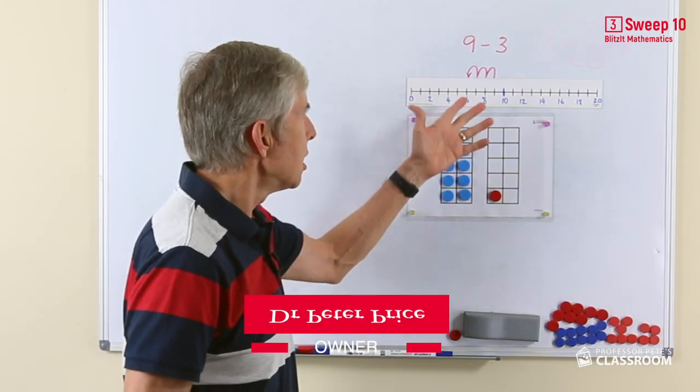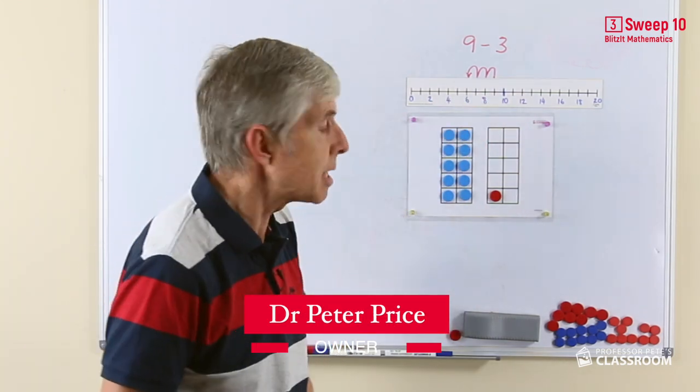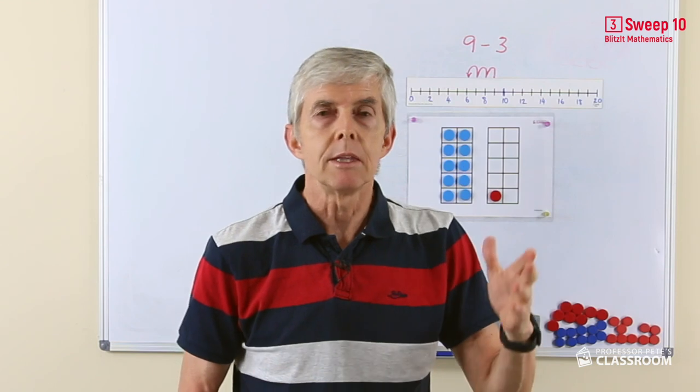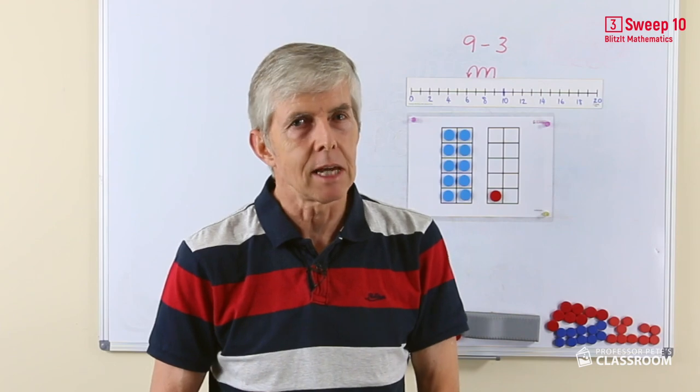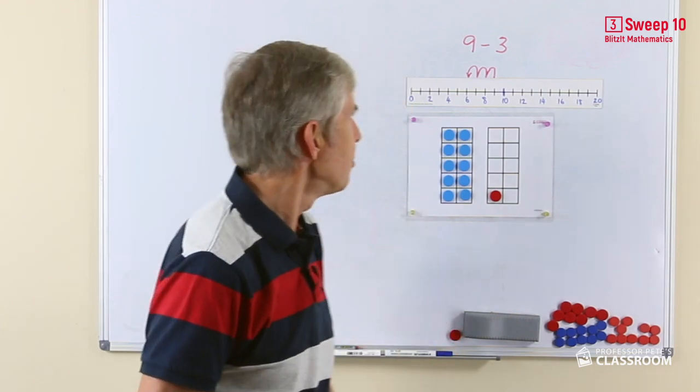So again, using a number line, we've got an example here, nine take away three. We can let the students visualize it on the number line. We want them to count it silently in their head, get the answer six, not too difficult.